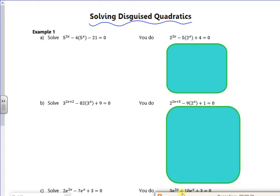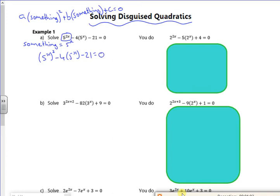Let's have a look then. So remember, for a disguised quadratic, it's something squared plus b lots of something, didn't think this out really when I was writing it, plus c is zero. So if I look at it, the something could be 5 to the power of x. So if I rewrite that as 5 to the x all squared, 5 to the 2x, minus 4 lots of 5 to the x, minus 21 is zero. I can put it in poly.